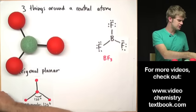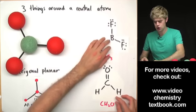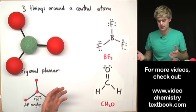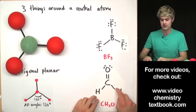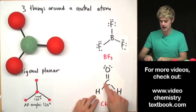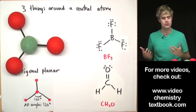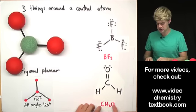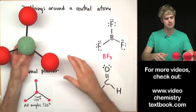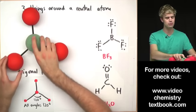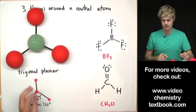Just as before, it doesn't matter whether we're talking about double bonds, single bonds, or triple bonds — it's all the same. In CH₂O, I have three things surrounding the central atom: a double bond, a single bond, and a single bond, but it's still just three things that want to be as far from each other as possible. So CH₂O is going to have the same shape in three dimensions as BF₃ — it's going to be a trigonal planar molecule with 120 degrees between each pair of bonds.